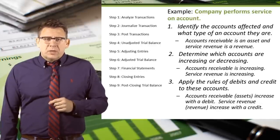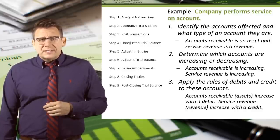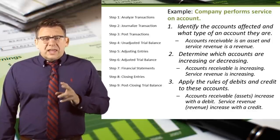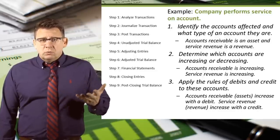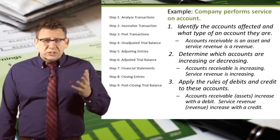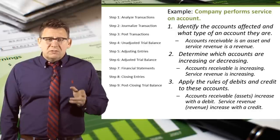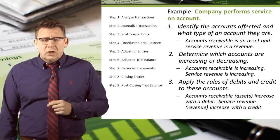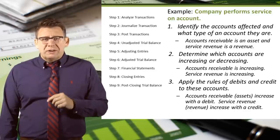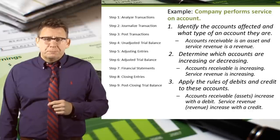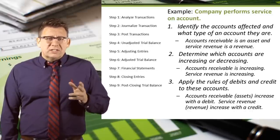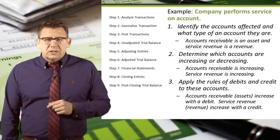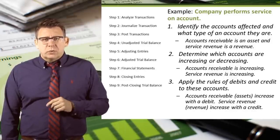Let's look at another example: a company performs service on account. Part one — the accounts are accounts receivable, an asset account, and service revenue, a revenue account. Part two: accounts receivable is increasing because we have more money owed to us after this transaction. Service revenue is also increasing because we've earned more revenue after this transaction. Part three: accounts receivable is an asset and assets are increased with a debit; service revenue is a revenue and revenues are increased with credits.